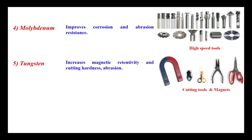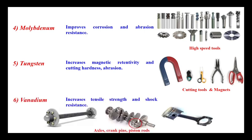Tungsten in the alloying process provides magnetic retentivity, cutting hardness, and increased abrasion resistance. Cutting tools and magnets have tungsten as an alloying element, and the magnetic retentivity is reflected in that particular alloying material. Vanadium increases tensile strength and shock resistance, enabling the manufacture of axles, crank pins, and piston rods. So by adding various alloying elements to plain carbon steel, each element improves certain properties, enabling the manufacture of different materials for different applications.